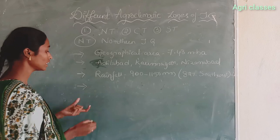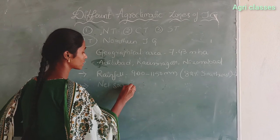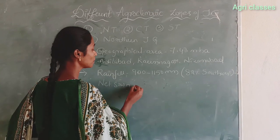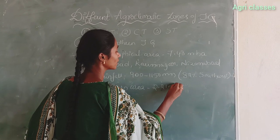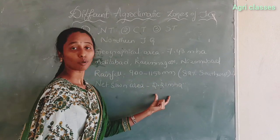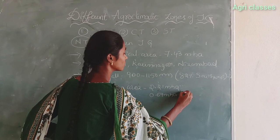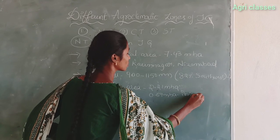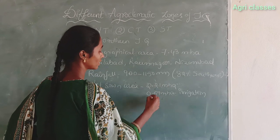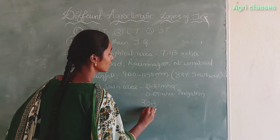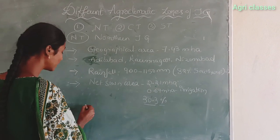The net zone area represents the total sowing area of crops plus orchards. This is 2.21 million hectares. In this 2.21 million hectares, 0.67 million hectares is under irrigation, representing 30.3% of the net zone area.